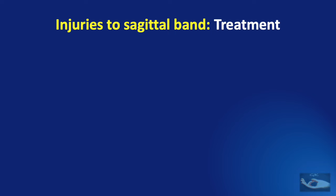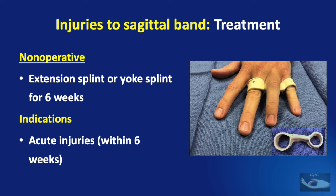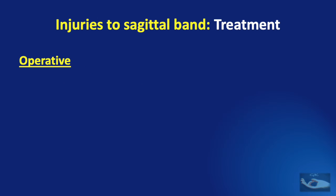Having made a diagnosis of rupture of the sagittal band, let us consider the available treatment modalities. The most important management is non-operative management with splints: an extension splint or a yolk splint is applied for six weeks. This ensures that the metacarpophalangeal joint of the injured finger is always kept extended relative to the metacarpophalangeal joints of the neighboring fingers, while allowing interphalangeal joint extension and flexion. Non-operative management is indicated for acute injuries — that is, when the diagnosis is made within six weeks.